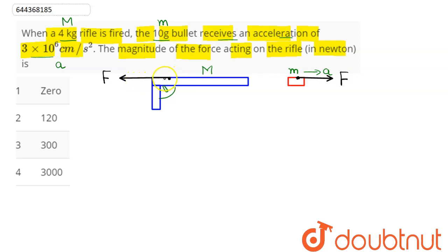We know the mass and acceleration of the bullet. Therefore, this force F acting on the rifle can be calculated as F = m × a, where m is the mass of the bullet, which is 10 grams.